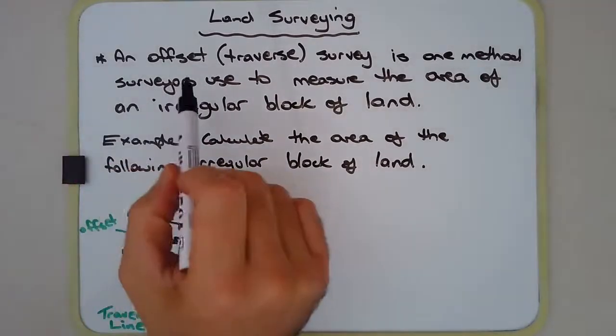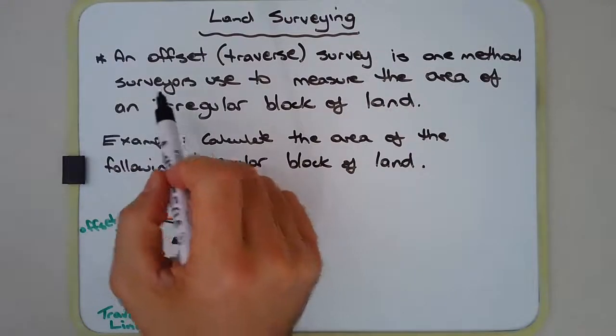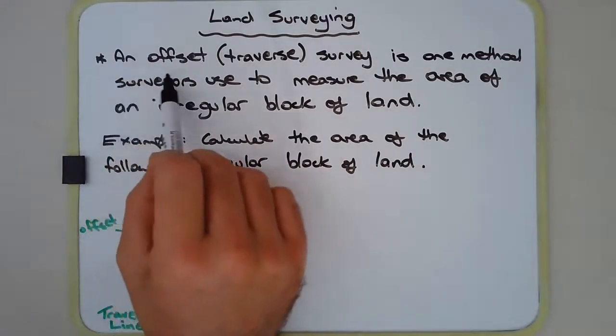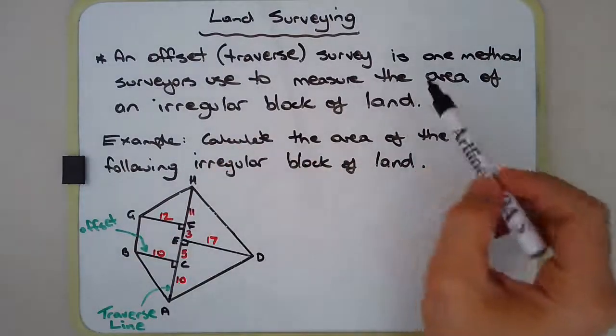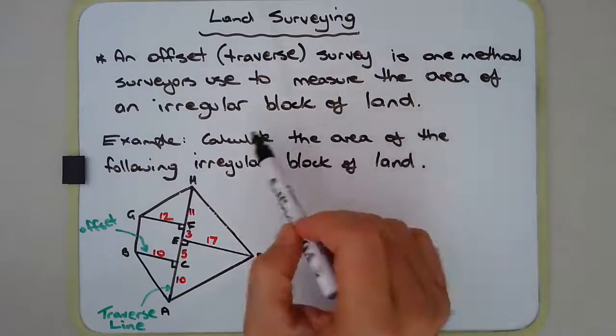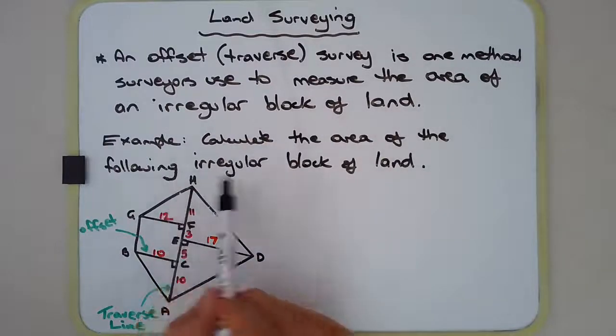And one method that surveyors use is they use a method called an offset survey, sometimes called a traverse survey. And this is one method that surveyors use to measure the area of an irregular block of land. And I think this is best done by example. So rather than going through a copious amount of theory, I think just looking at an example, we'll be able to get through this a lot quicker.